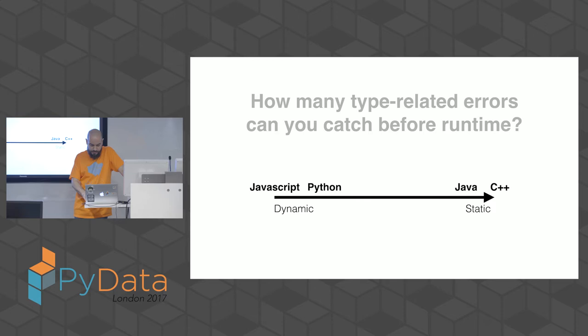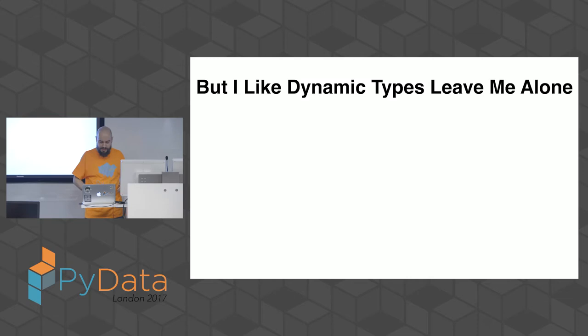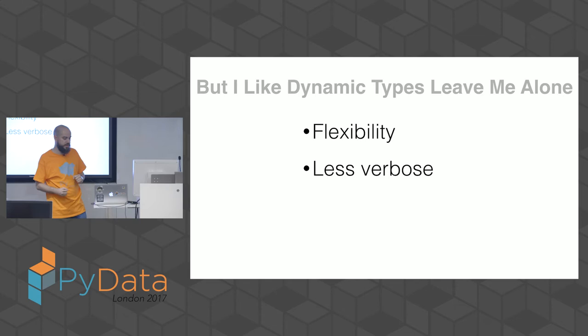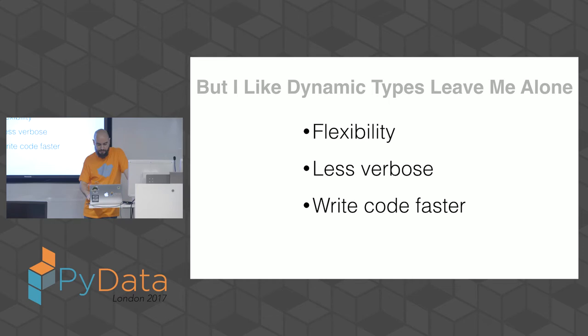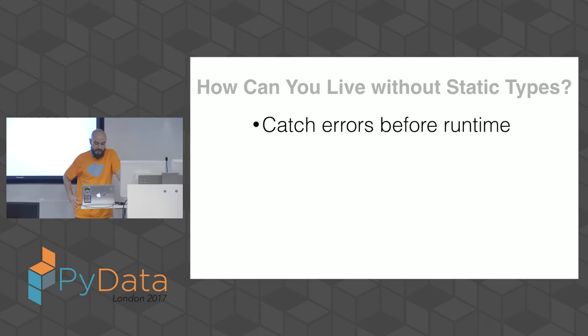People tend to be very polarized about this. The benefits of dynamic typing are mainly flexibility — you don't have the constraints of static typing — and Python is particularly good here, being less verbose. You write less code and the feeling is that you write code faster. On the other side, the benefits of static typing include catching errors before runtime, so the compiler catches silly mistakes you might make.